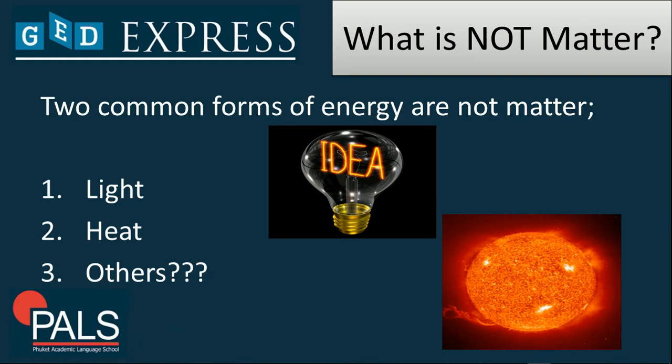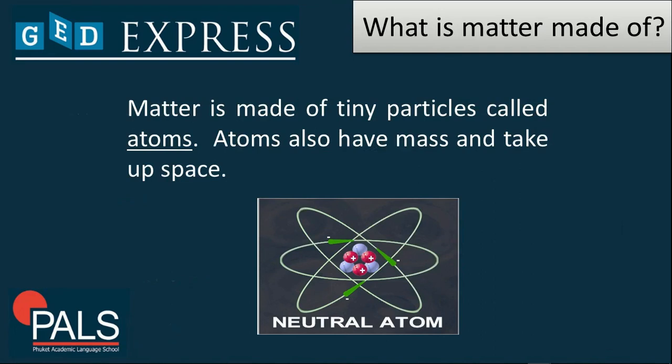Can you think of other materials or objects that you can identify as not matter? Now, what is matter made of? Matter is technically made of tiny particles called atoms, and atoms have mass and take up space. The parts of an atom are called protons, which carry a positive charge; electrons, which are negatively charged; and neutrons, which carry a neutral charge.